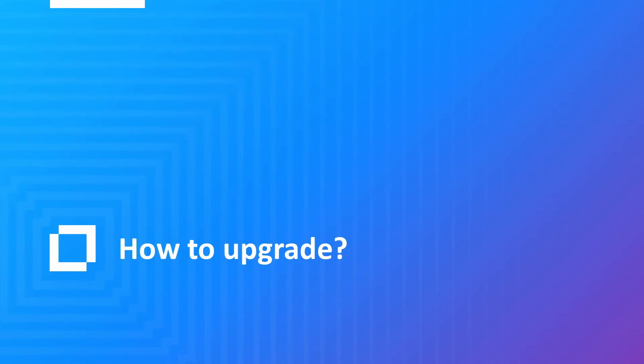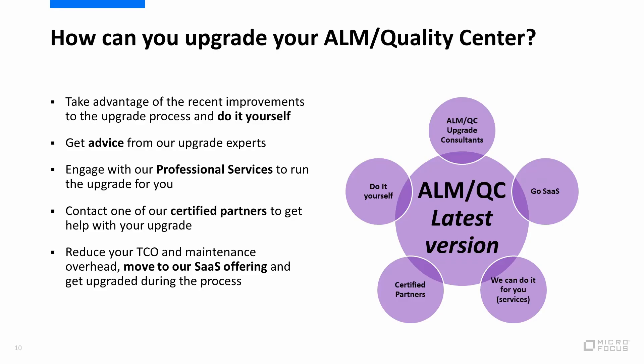Now that we covered the main reasons and motivations for you to upgrade, let's see what is the best way to achieve that. You can take advantage of the recent improvements to the upgrade process such as the ALM robot and do it yourself. You can get advice from our upgrade experts to plan the upgrade. If you'd like external help, you can engage with our professional services group or contact one of our certified partners. The last option, if you would like to reduce your maintenance costs, is to move to our SaaS offering and get upgraded during routine maintenance and administrative processes.